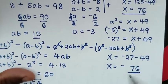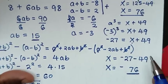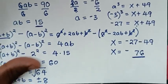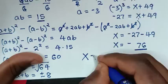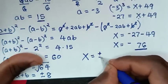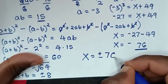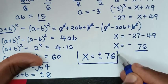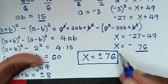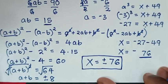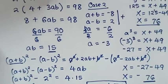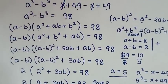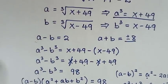The first value of x is 76 and the second value is -76. Therefore the values of x are ±76. These are our final answers. Thank you for watching — subscribe to my channel and see you in the next video.